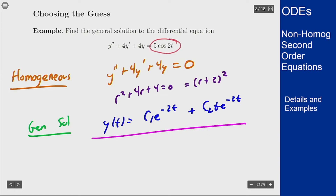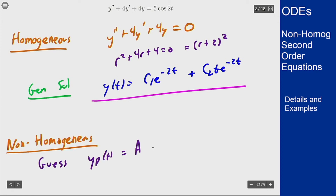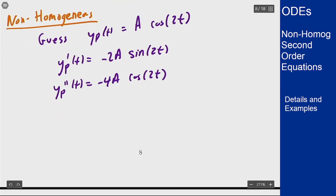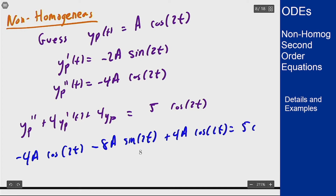Now for the non-homogeneous part we have 5 cosine of 2t on the right. When we had exponentials we just guessed the exponential itself, so our guess should include a cosine of 2t. If we plug in just y_p = a cos(2t), taking two derivatives and substituting gives negative 4a cos(2t) minus 8a sin(2t) plus 4a cos(2t) equals 5 cos(2t).